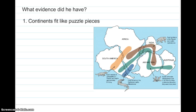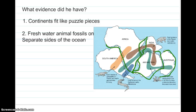So what evidence did Alfred Wegener have? Well, his main piece of evidence was the fact that the continents seemed to fit together like puzzle pieces — and they do. Also, later on after Wegener's death, it was found that there were freshwater reptiles whose fossils were found on completely separate sides of the ocean. If you look at this Mesosaurus down here, they found fossils of this animal in both South America and Africa.